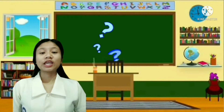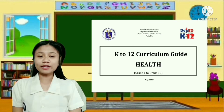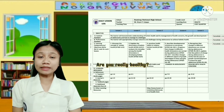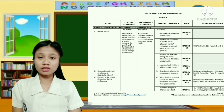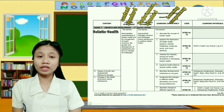Question: saan natin pwede kunin ito? Kinukuha natin ito sa pinagkakatiwalaang sources, which is the curriculum guide. Like for example, health na pili mo, which is grade 7, and your lesson for day 1 is 'Are you really healthy?', which is nakapaloob sa holistic health. Punta tayo sa curriculum guide, which is grade 7 holistic health. Makikita natin dito yung content standard, performance standard, and learning competencies. Yung learning competencies mo is dapat kung saan malapit sa lesson mo. And yung code din is nakalagay din dito sa curriculum guide.